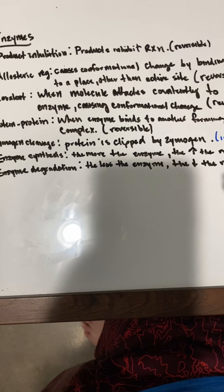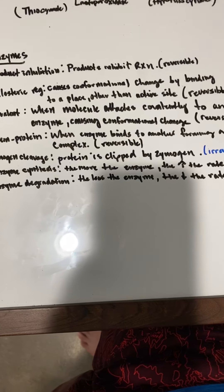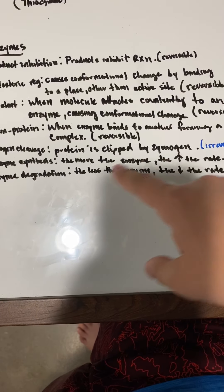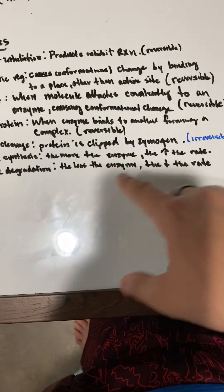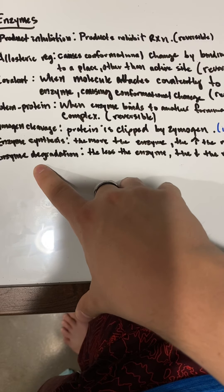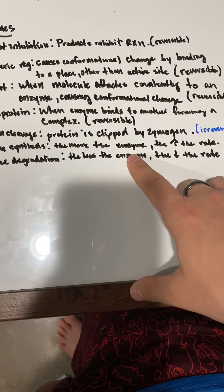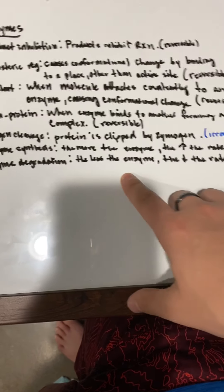Then we have zymogen cleavage, which is the irreversible one. The protein is clipped by a zymogen so it's actually missing a piece of the protein. This typically happens in the GI tract. We also have enzyme synthesis and enzyme degradation—the more enzyme you have, the higher the rate; the less enzyme, the lower the rate.